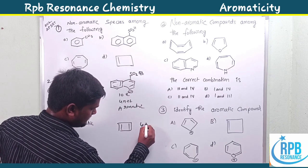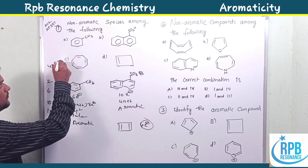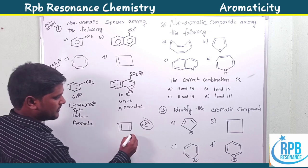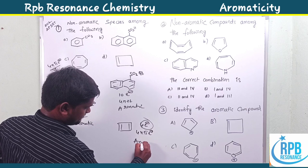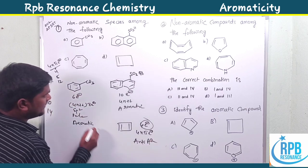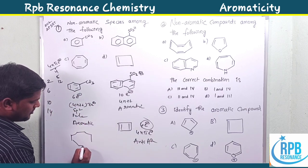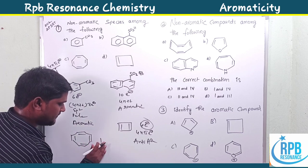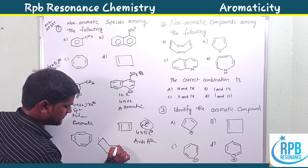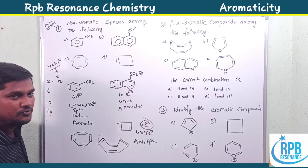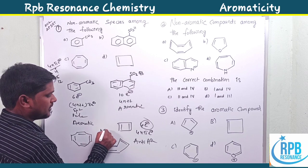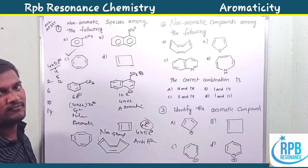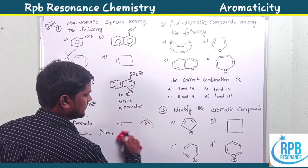Option D has four pi electrons, which comes under the 4n system (n=1), so it is anti-aromatic. Option C is cyclooctatetraene. The original shape of cyclooctatetraene is tub-shaped, and due to this non-planarity it is non-aromatic. Therefore option C is correct for JEE 2012.